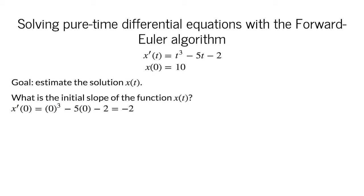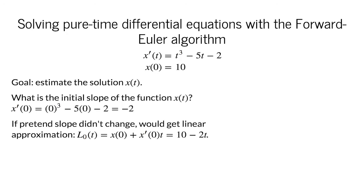The slope of the graph of x of t is negative 2 only at t equals 0. For larger values of t, it will change according to the equation x prime of t equals t cubed minus 5t minus 2. But let's pretend that we don't realize that fact. Let's pretend that the slope x prime of t stays fixed at the value negative 2. A function with constant slope is a line, so let's use the linear approximation to x of t evaluated at t equals 0.